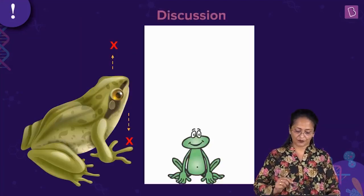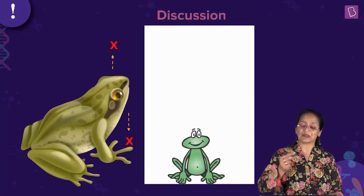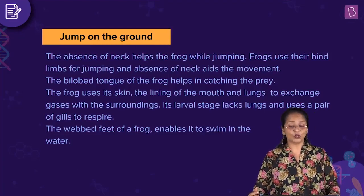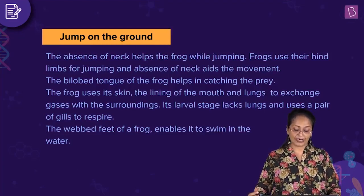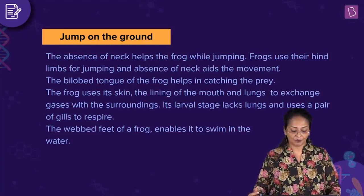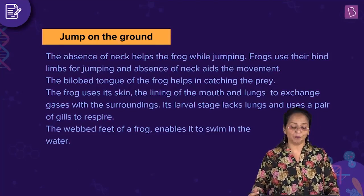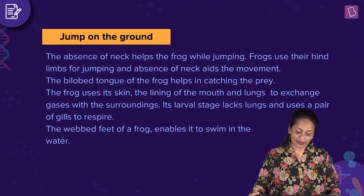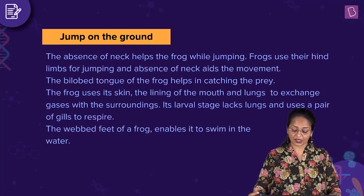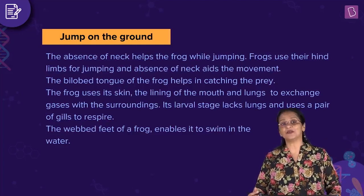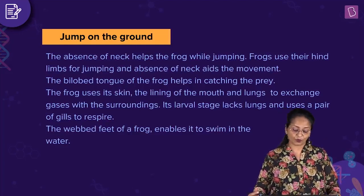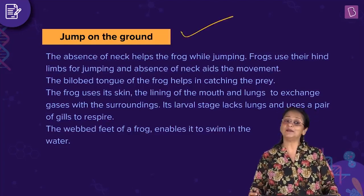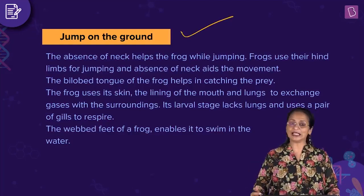The right answer is to jump on the ground. For the frog to jump it uses its hind legs, and absence of neck aids that movement. Frogs use their hind limbs for jumping and absence of neck aids the movement. The bilobed tongue helps in catching prey. The frog uses its skin, lining of the mouth, and lungs to exchange gases. Its larval stage uses gills, and webbed feet enable swimming. So the right answer is: absence of neck helps it to jump on the ground.